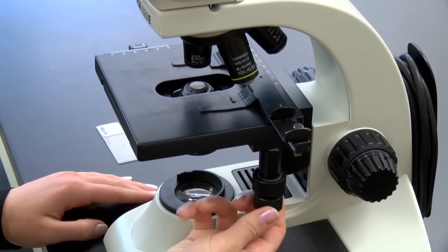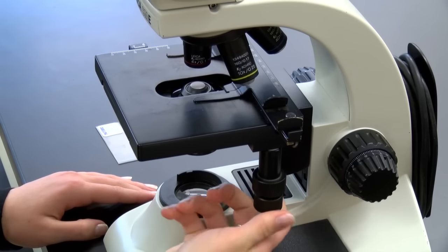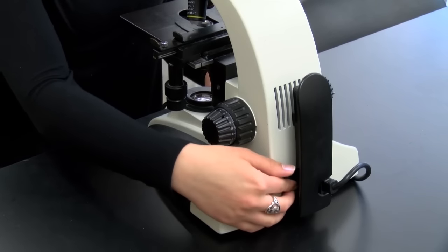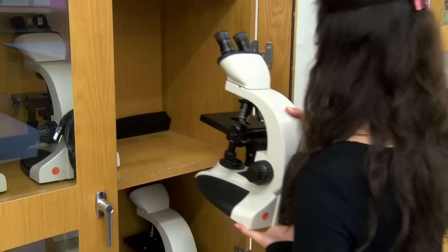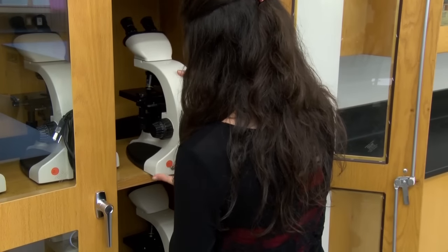Check that the stage is clean and dry. Turn off the light and power and wrap the cord. Carry the microscope with both hands back to the cabinet. Be sure that the arm is facing out and that the microscopes are not crowded together.